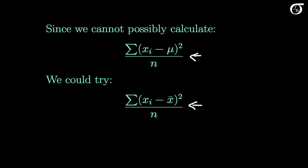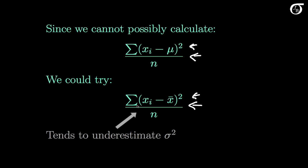I'm not going to prove that here, but we could show it mathematically using calculus. Roughly speaking, the sample mean x-bar must fall near the center of the observations, whereas mu, the true mean, could be any value. So this sum here is going to be smaller than this sum, and so this quantity tends to underestimate the true value of the population variance sigma squared.